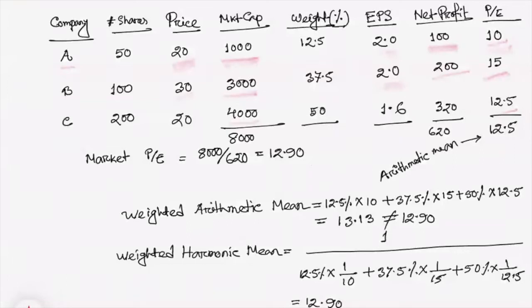So if we take the total market cap, it will be 8,000, and if we take the total net profit of the market, it will be 620. So what should be the overall price-earning ratio of the market? The market price-earning ratio should be 8,000 divided by 620, which is equal to 12.90.